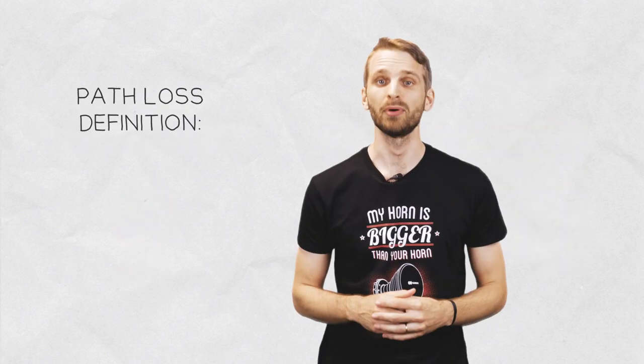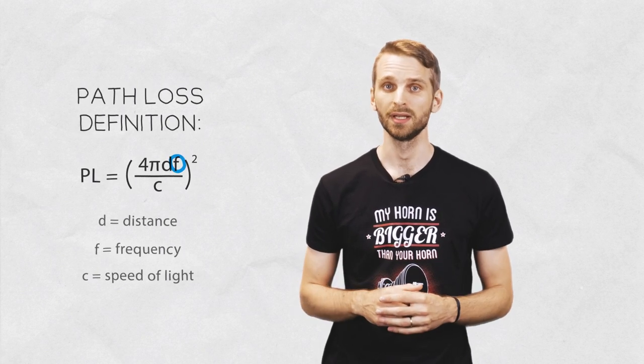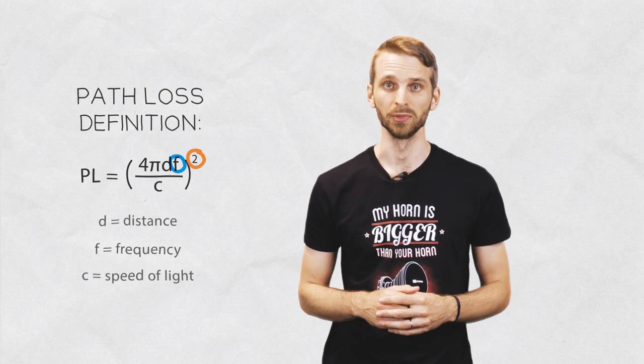Path loss is part of the link budget equation and it not only increases with distance but also frequency. Moreover, it grows exponentially due to the power of 2.